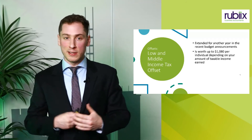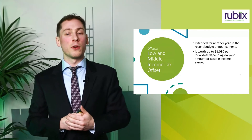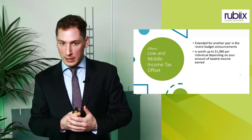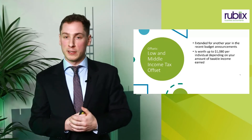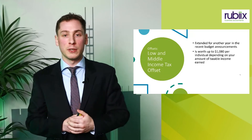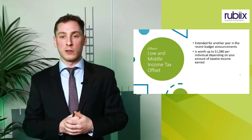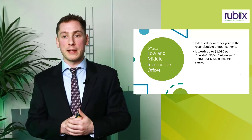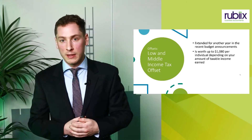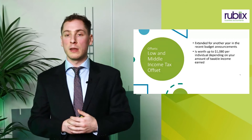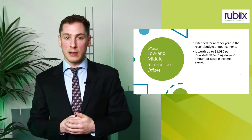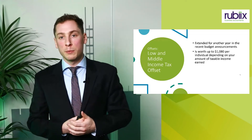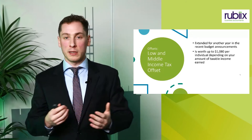Moving on to offsets — this is one better than a deduction. The low and middle income tax offset has been extended for another year as per the recent budget announcements, which is fantastic. There's absolutely nothing you need to do — you will receive this regardless, and we will ensure you receive it. It is worth up to $1,080 per individual, depending on the taxable income you've earned. There is a threshold: once you reach a certain amount of income, it slowly fades out, and if you're under a certain amount, it slowly fades in. So depending on where your income sits in the tax brackets, that determines how much of this offset you'll receive.